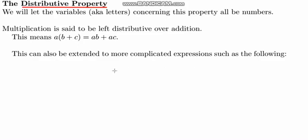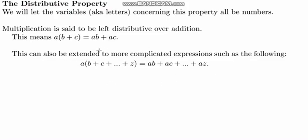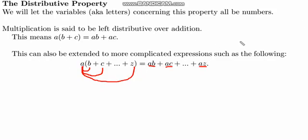This can be extended to more complicated expressions. We take the number a and move it over to give a times b, then a times c, and this process continues through all the dots — meaning there could be other letters — all the way to a times z. We picture the a zooming over to all the variables in the expression, and that's what it means to be left distributive over addition.